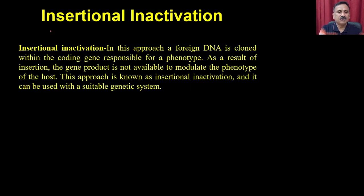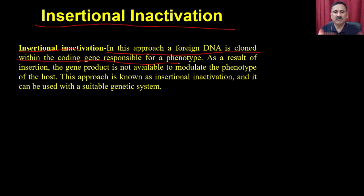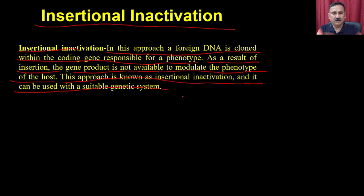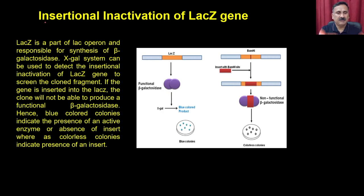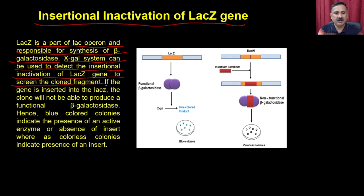The third approach is insertional inactivation. In this approach, a foreign DNA is cloned within the coding gene responsible for a phenotype. As a result of the insertion, the gene product is not available to modulate the phenotype of the host. For example, in an insertional inactivation of lacZ: lacZ is part of the lac operon responsible for synthesis of beta-galactosidase, and the X-gal system can be used to detect insertional inactivation of lacZ to screen the cloned fragment. If the gene is inserted into lacZ, the clone will not produce functional beta-galactosidase; hence blue-colored colonies indicate active enzyme or absence of insert, whereas colorless colonies indicate presence of an insert.